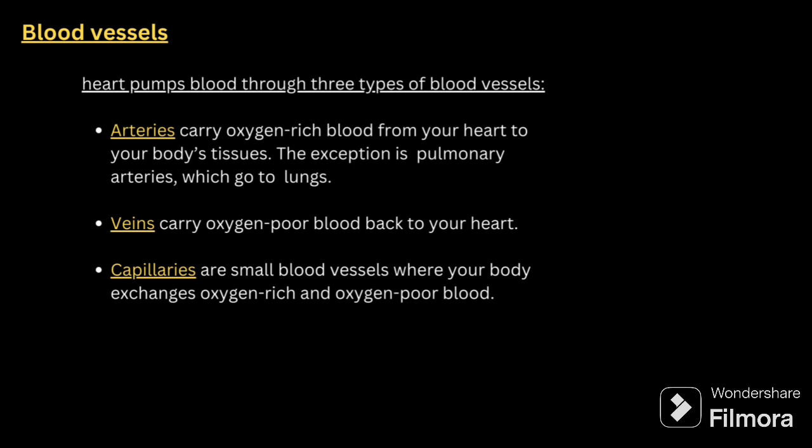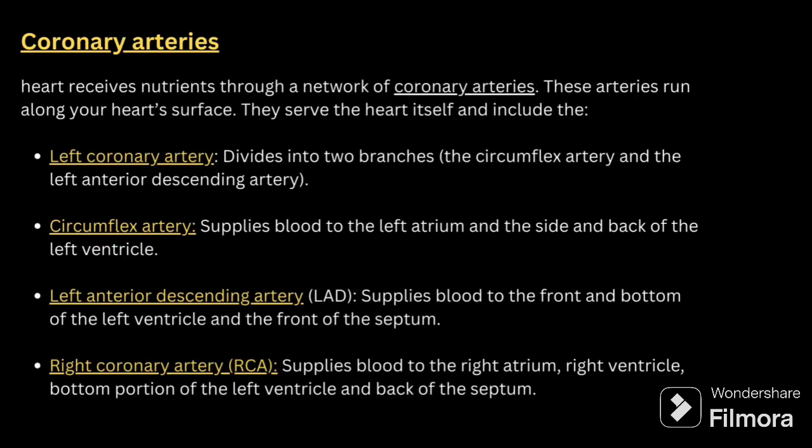Next, talk about the electrical conduction system. First, the heart receives nutrients through a network of coronary arteries that run along the heart surface. These include the left coronary artery, which divides into two branches: the circumflex artery and the left anterior descending artery. The circumflex artery supplies blood to the left atrium and the side and back of the left ventricle. The left anterior descending artery supplies the front and bottom of the left ventricle and front of the septum. The right coronary artery supplies blood to the right atrium, right ventricle, bottom of the left ventricle, and back of the septum. Take a proper image of the heart to clearly understand this.